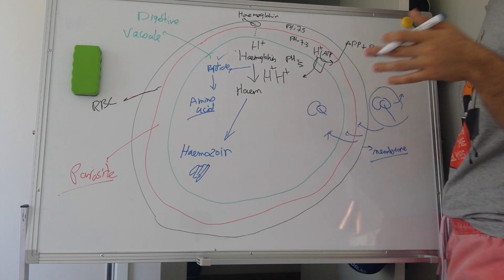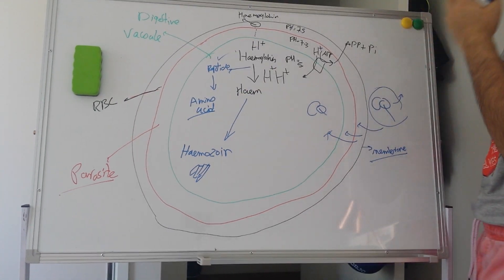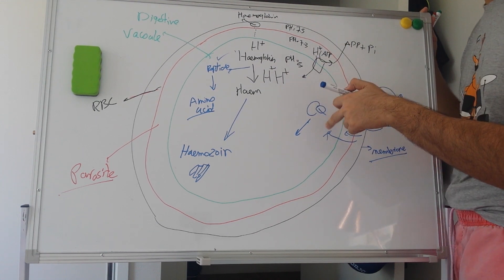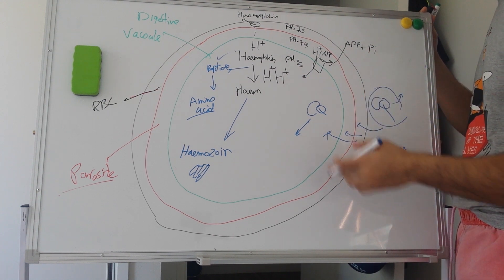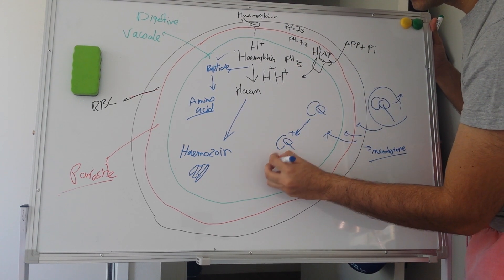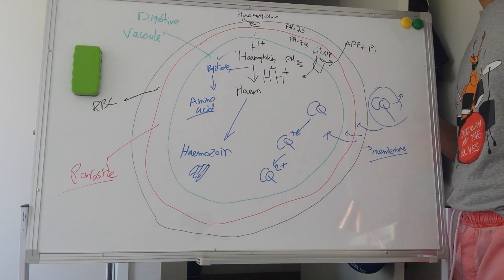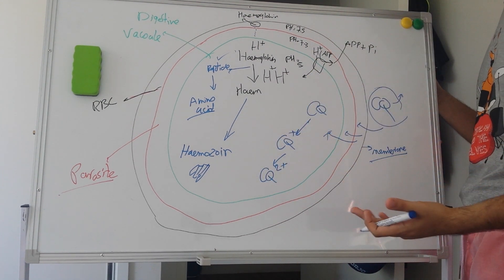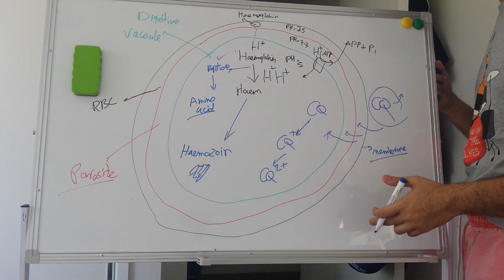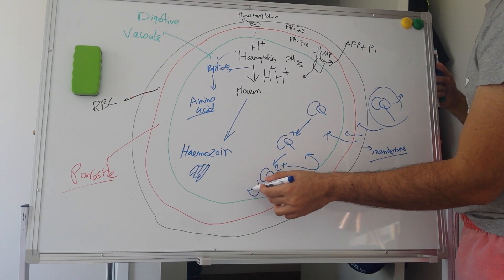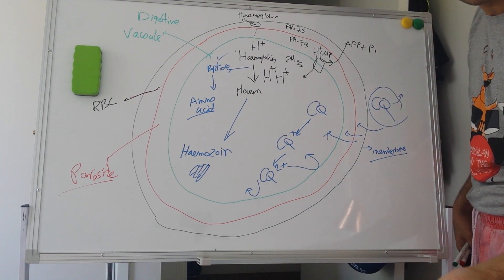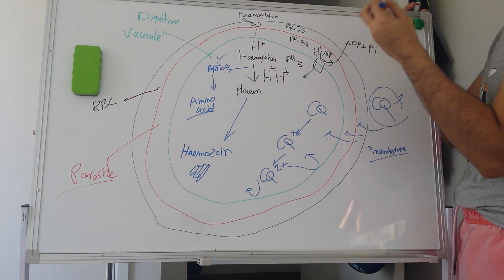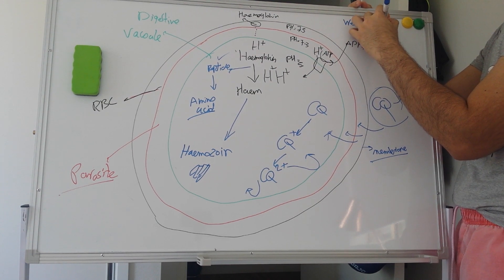Once inside the digestive vacuole, recall that CQ is a very weak base and the environment there is pretty acidic. So it protonates — it can easily gain hydrogen ions. CQ has two nitrogen atoms in its structure that can both protonate, so it becomes CQ⁺ and then CQ²⁺. Now CQ²⁺ is polar, and polar molecules cannot diffuse out through the lipid membrane. This phenomenon is known as weak base trapping.